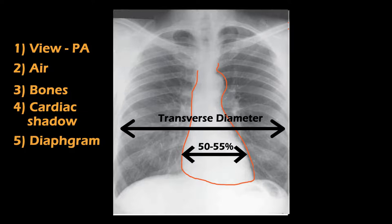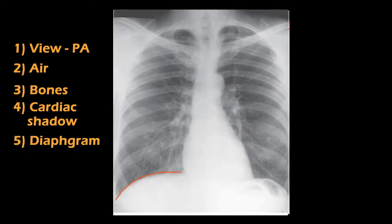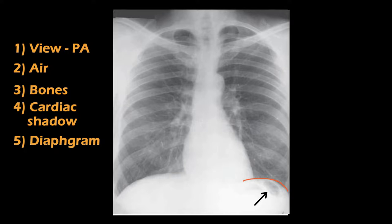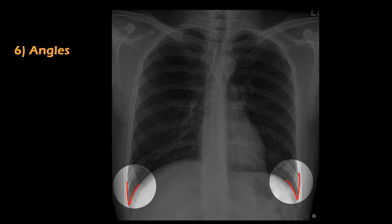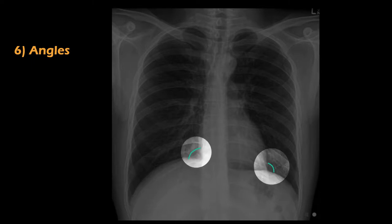D stands for diaphragm, showing the right and the left domes. The right dome of the diaphragm lies at the level of about the sixth rib anteriorly, with the shadow of the liver beneath it. The left dome shows gas in the fundus of the stomach below it. Now for the second sequence — A stands for angles. These are the two costofrenic angles; costo means ribs and phrenic refers to the diaphragm. Normally this angle is clear, sharp, and pointed, but it is obliterated in conditions like pleural effusion. These are the right and left cardiophrenic angles — the angles between the heart and the diaphragm — which are obliterated in pericardial effusion.